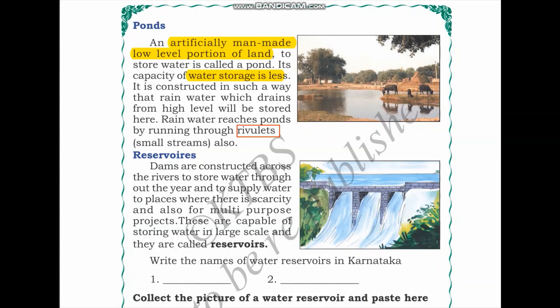The next source of water is reservoirs. Dams are constructed across rivers to store water throughout the year and supply it to places where there is scarcity and also for multi-purpose projects. Since it does not rain throughout the year, some regions face water scarcity in summer. To ensure year-long supply, we construct dams or reservoirs, which are capable of storing water on a large scale — unlike ponds.